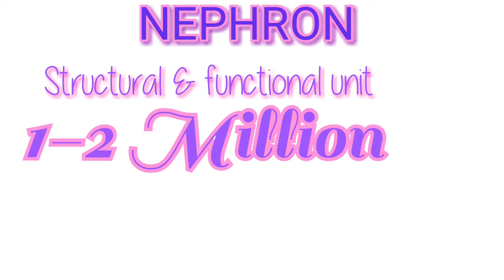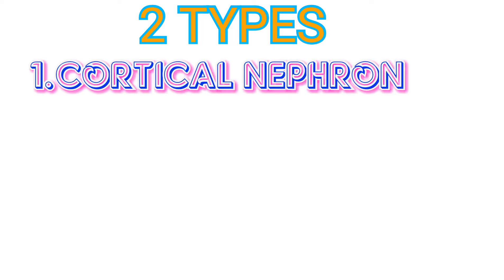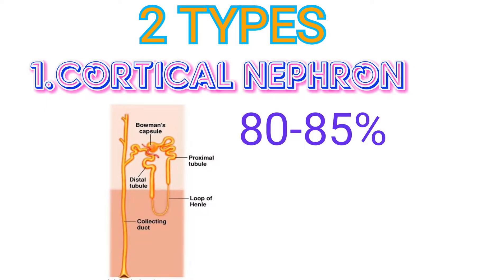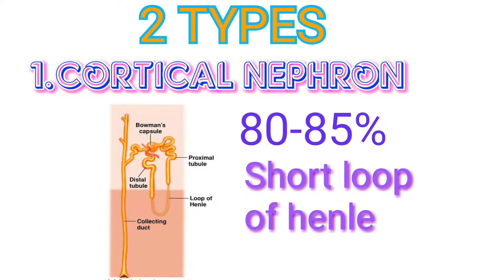There are two types of nephrons. The first type is cortical nephrons, which make up 80 to 85 percent of all nephrons. Their renal corpuscles lie in the outer portion of the renal cortex. They have short loops of Henle that lie mainly in the cortex and penetrate only into the outer region of the renal medulla.